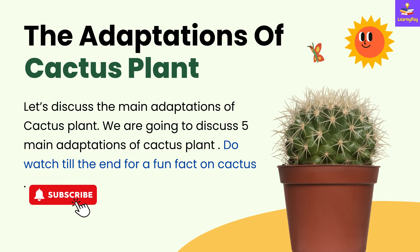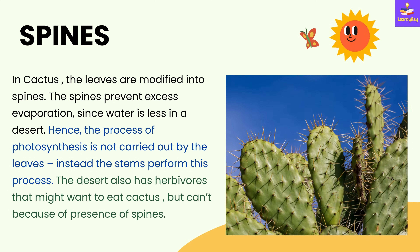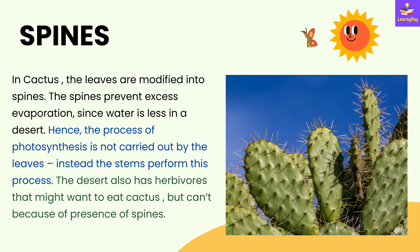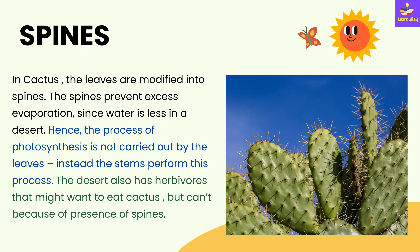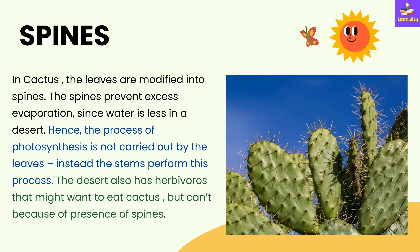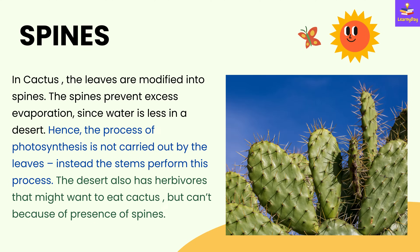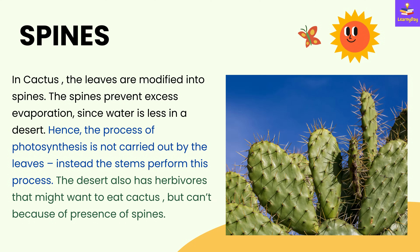Before we begin, the first adaptation of cactus is spines. In cactus, the leaves are modified into spines. The spines prevent excess evaporation since water is scarce in a desert. Hence, the process of photosynthesis is not carried out by the leaves but the stems perform this process.